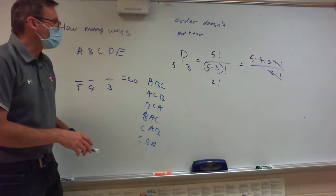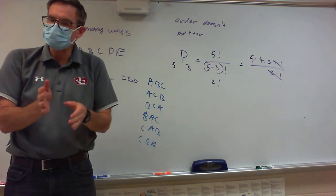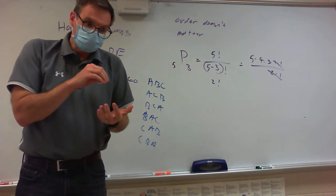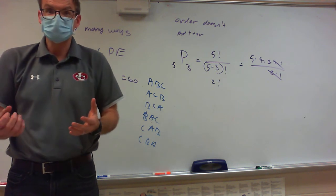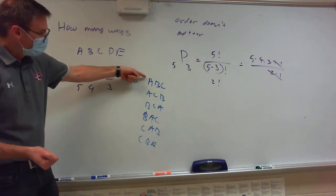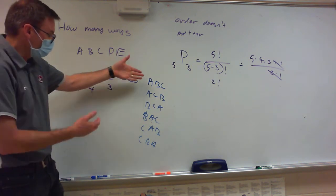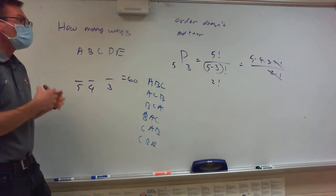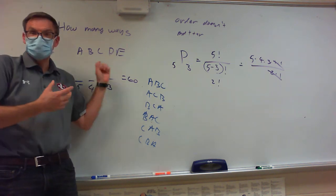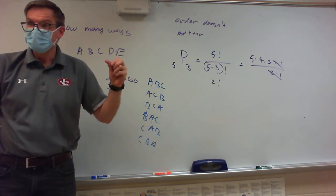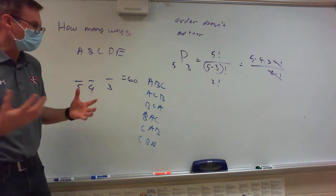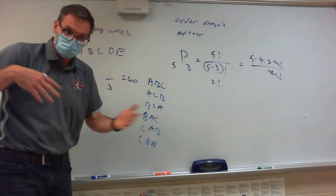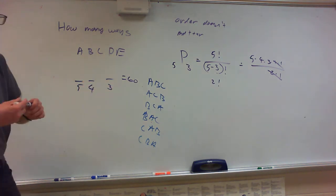The core difference between when order matters and order doesn't matter: when order doesn't matter, you get fewer differences, because all of those arrangements are the same. All of those would be different if order matters, but since they're the same when order doesn't matter, the numbers we're going to be dealing with today are going to be smaller. Last class we taught permutations — that was when order mattered. Today it's called a combination.